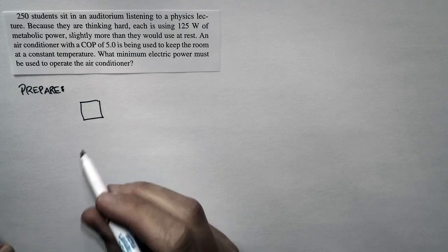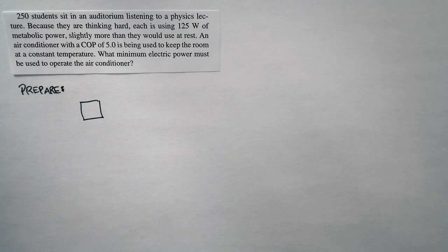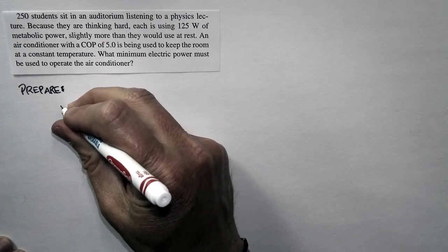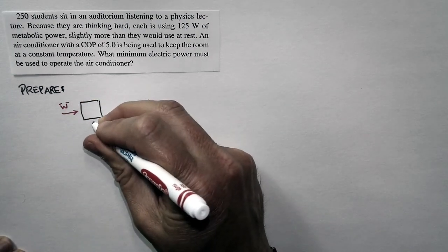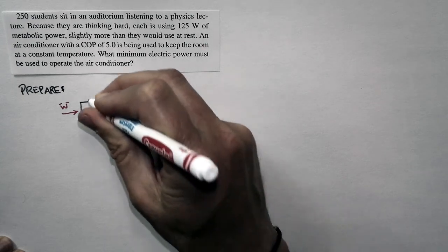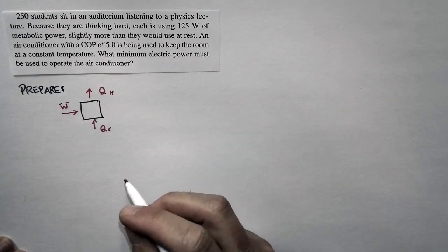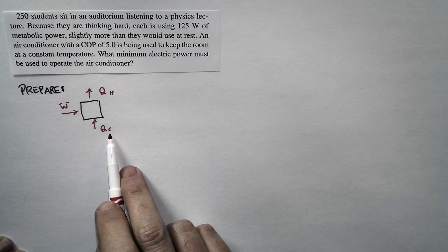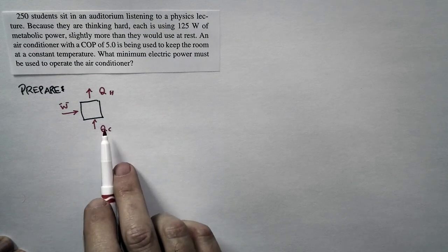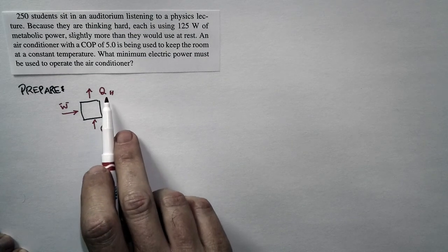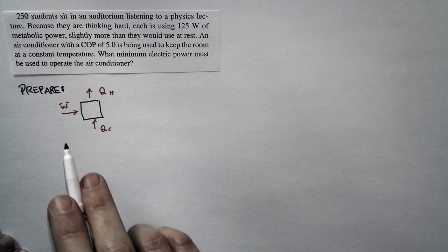An air conditioner is basically a heat pump, and what a heat pump does is this: I have to put in work. I'm going to pull heat out of a cold reservoir and dump the heat into a hot reservoir. It just takes heat and moves it from a place that's cooler to a place that's hotter, so inside the air conditioning lecture hall into the great outdoors, and it takes work to make that happen.